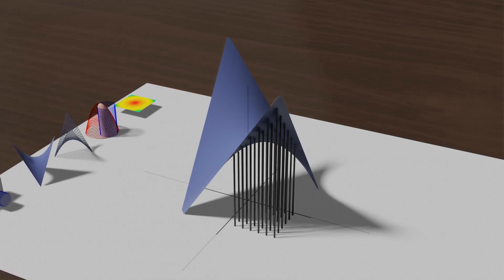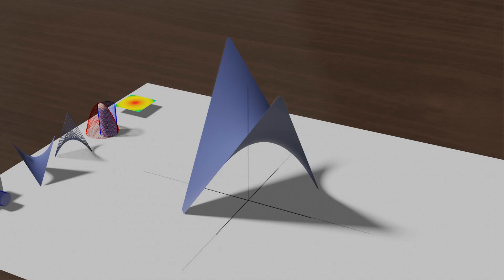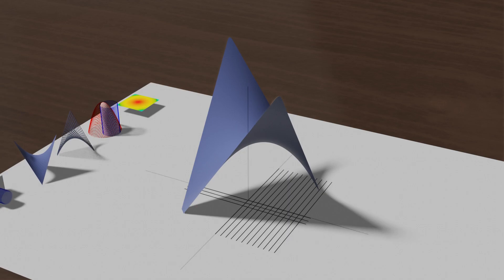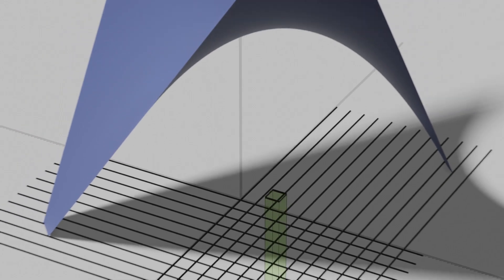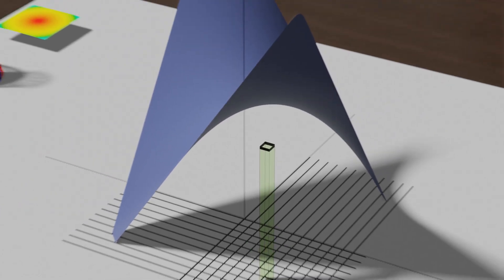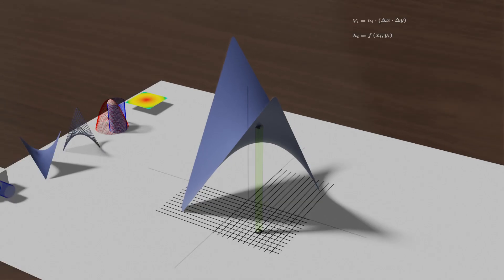First, let's approximately determine the volume. To do that, we will divide the domain, for example like this. The lines are perpendicular to the axis. Now, look at one part of the domain and calculate the volume above it. Again, it is height multiplied by the area. The height is chosen arbitrarily. We choose one point from each part randomly, and then take the value of the function as a height.